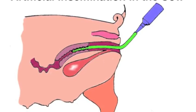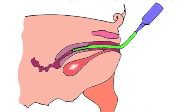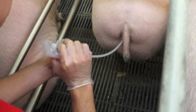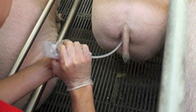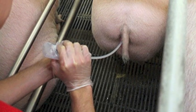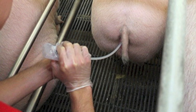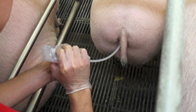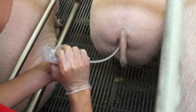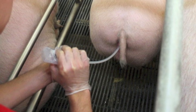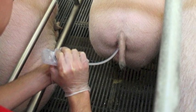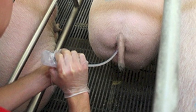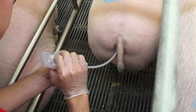You can check if you have entered the cervix by giving it a little tug — if it does not pull out with little force, then you are in the cervix. Now you can remove the tip of the semen pouch or bottle and insert it into the end of the rod and apply gentle pressure to the pouch. The semen will begin to flow into the sow. Patience is key — do not force the semen into the sow.